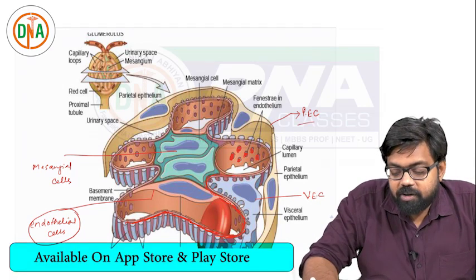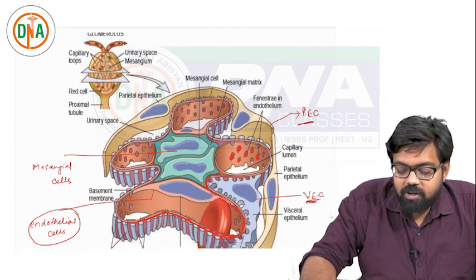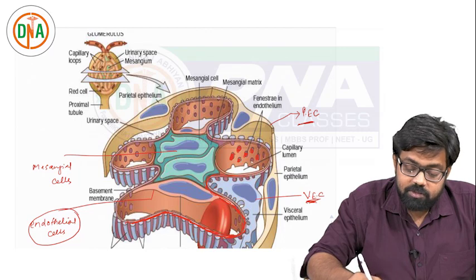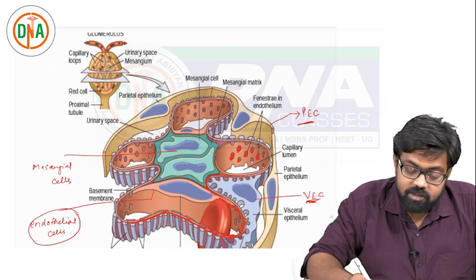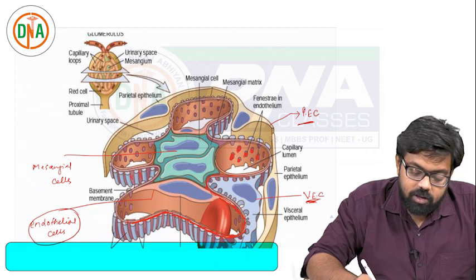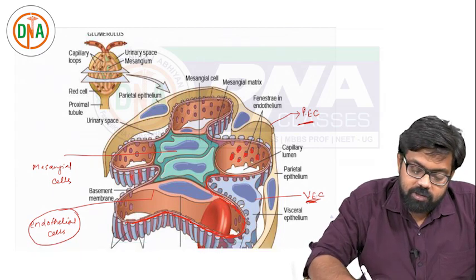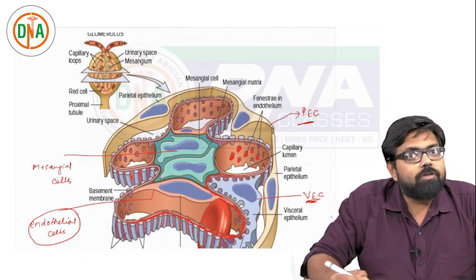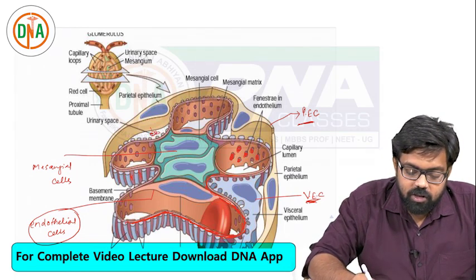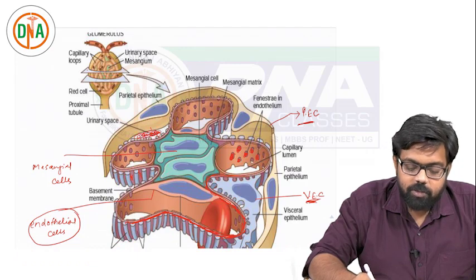Once again: this is the parietal epithelial cell, this blue colored cell is the visceral epithelial cell, these green cells are the mesangial cells, these brown colored cells are the endothelial cells, and this maroon colored structure is the glomerular basement membrane. The urinary space is just in between the parietal and visceral layer - so this becomes the urinary space.